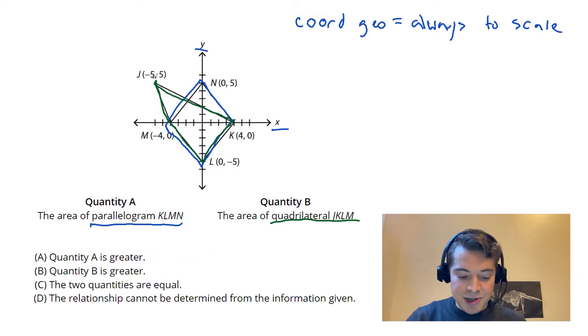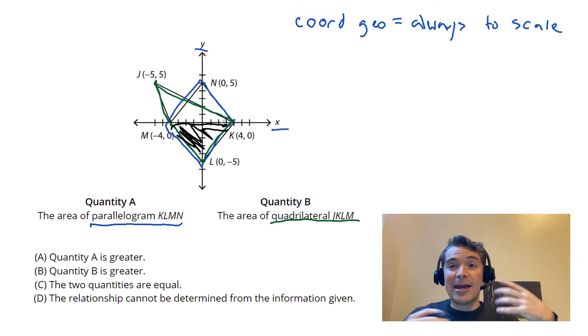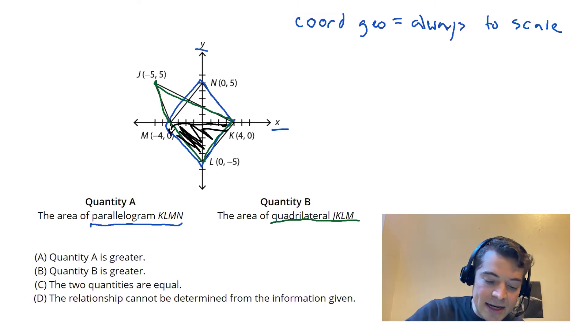Recognize that this bottom chunk down here, what we've got going on in the bottom chunk of the shapes, that's common between both my shapes. So if I'm trying to find and compare the areas of the two, I don't really need to consider what's going on with this bottom chunk because that's going to be the same in both my area calculations. So I'm just going to go ahead and ignore that bottom chunk.